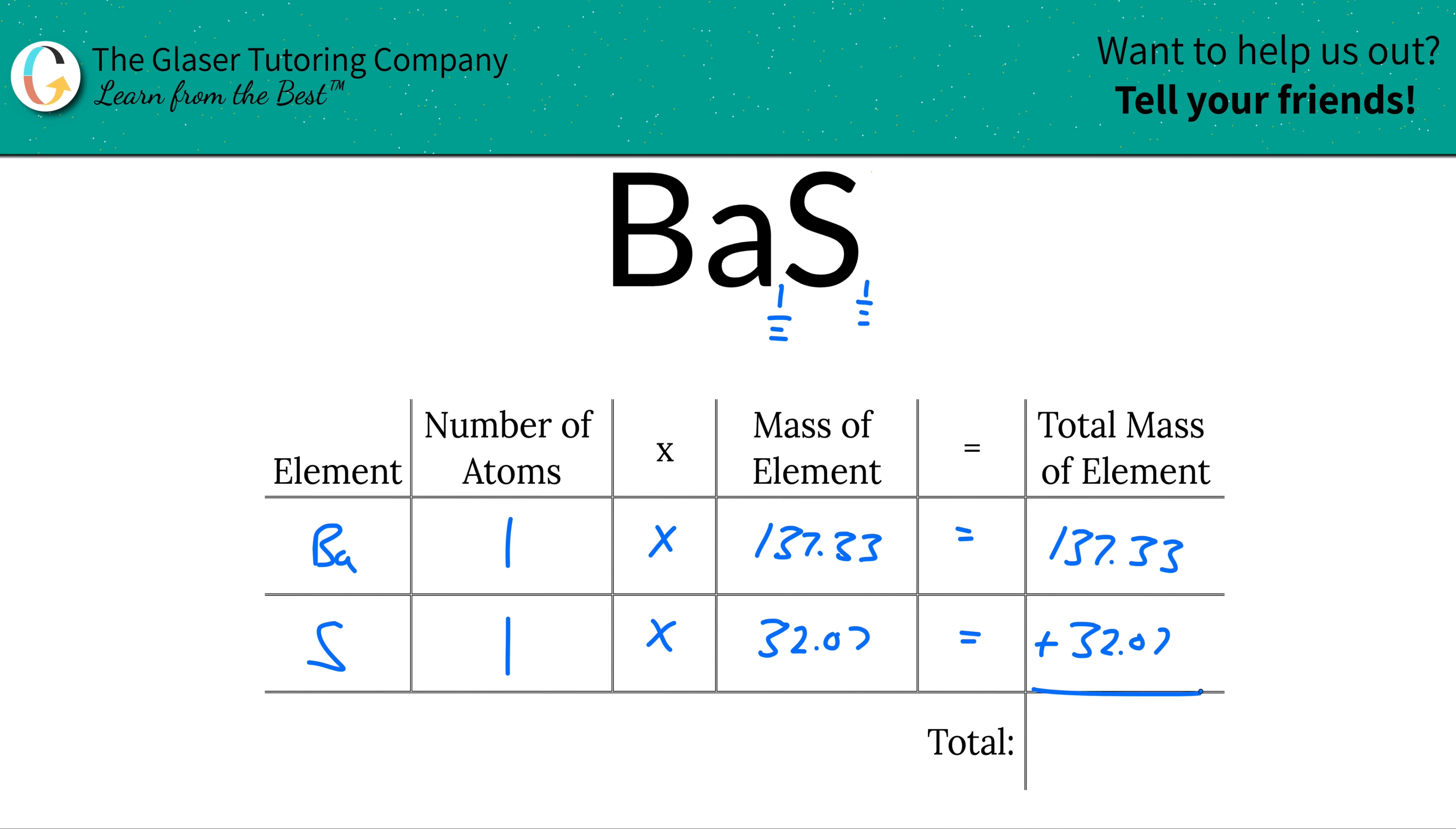Now since this represents the total mass of barium, and this represents the total mass of sulfur, we can add those two together now, right? We add that column up to find now the total mass of the entire compound.